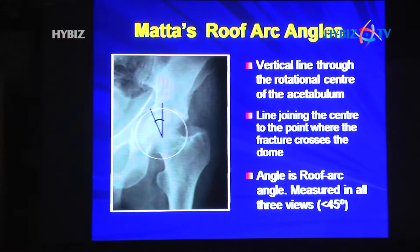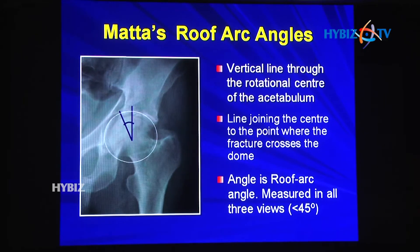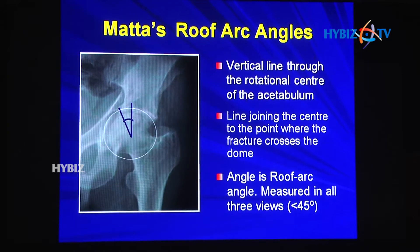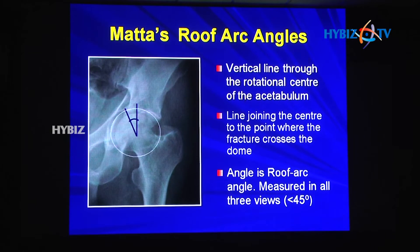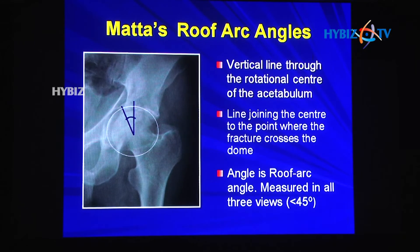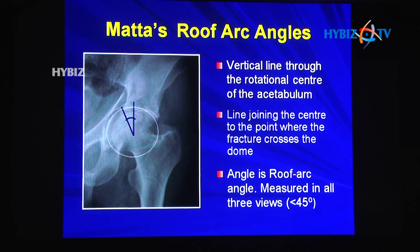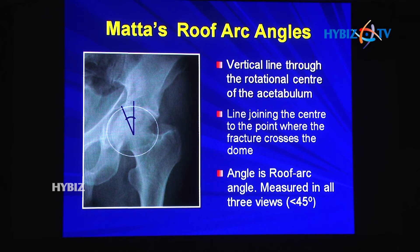Matta said operate if the roof arc angle is less than 45 degrees. Mark Waras has suggested that on the posterior side, even up to 60–70 degrees may warrant surgery, because the posterior articular area is heavily loaded when the hip is in flexion. This roof arc measurement must be taken in all three views — the Judet views (internal oblique, external oblique, and AP). If in any of those views the angle is less than 45 degrees, that is an indication to operate.